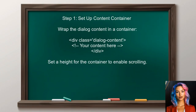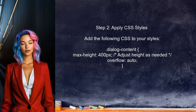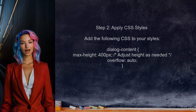To enable vertical scrolling in the PrimeNG modal dialog, you should first ensure that the dialog's content is set up correctly. This involves wrapping the content inside a container with a defined height. Next, apply CSS styles to the container — specifically, set the overflow property to auto, which will allow for vertical scrolling when the content exceeds the container's height.